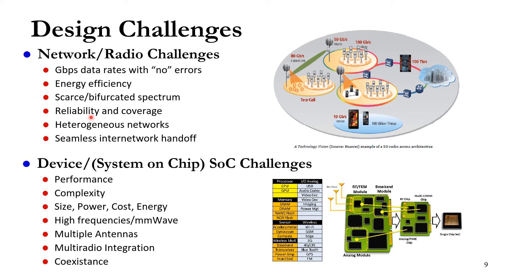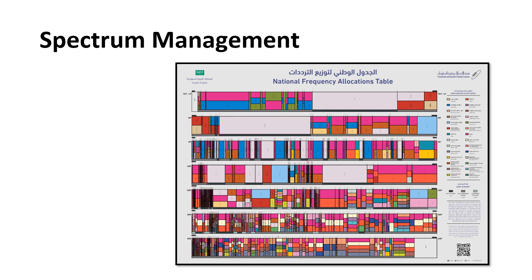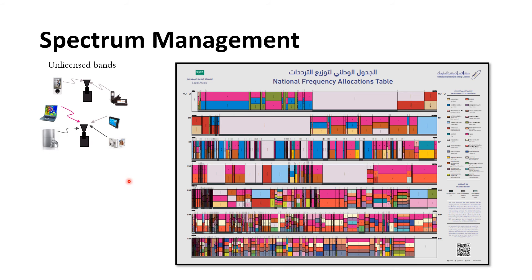Speaking of the spectrum, in Saudi Arabia it is regulated by the CITC, which has a plan covering very low to very high frequencies. The spectrum is very crowded. We have two types of wireless systems: unlicensed bands, where you can use the spectrum without a specific license — such as the ISM band at 2.4 GHz, which includes Bluetooth and Wi-Fi — and the ultra-wideband spectrum.